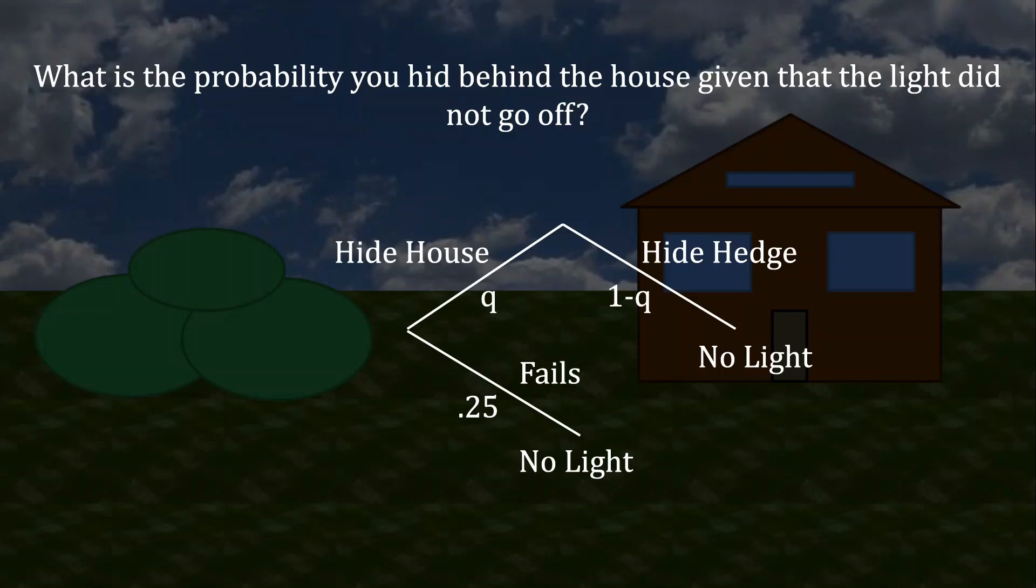Bayes' rule allows us to calculate my posterior belief that you have hidden behind the house, given that I observe no light. To do that, all we do is take the probability of me arriving at that particular outcome, in this case that's Q times 0.25, and dividing it by the total probability of reaching a situation where no light is turning on. There are two ways that can happen. There's Q times 0.25, and then there's 1-Q. So 0.25 times Q divided by 0.25 times Q plus 1-Q is my posterior belief. This is the belief that I have that you've hidden behind the house, given that I do not observe a light.